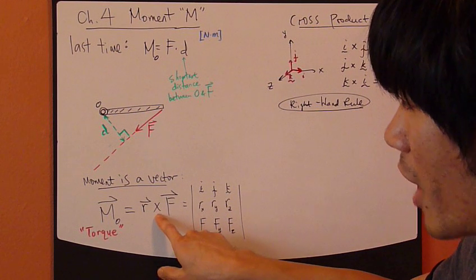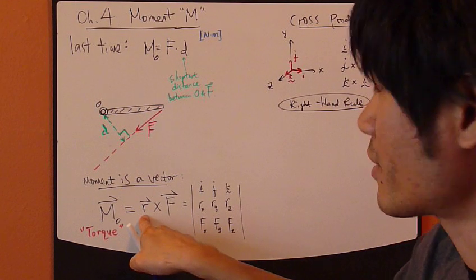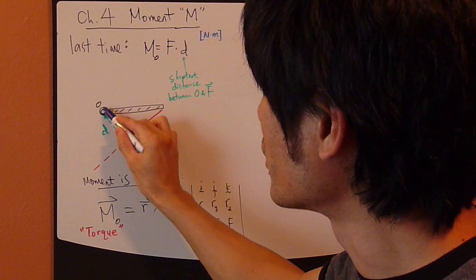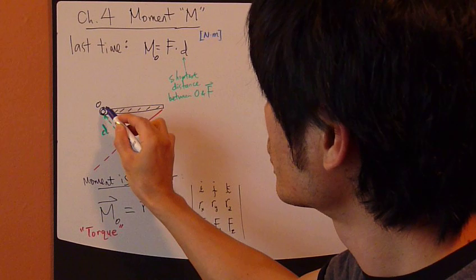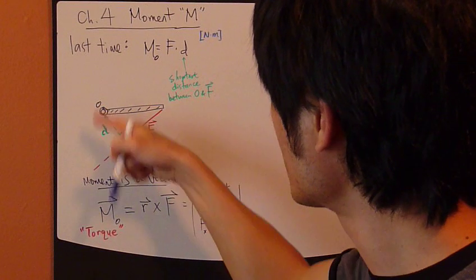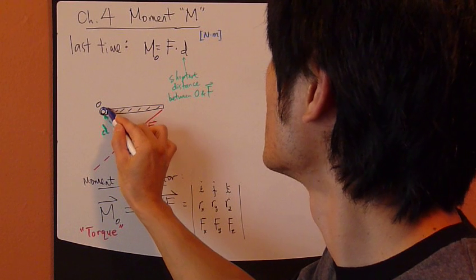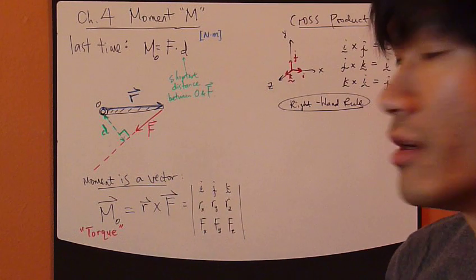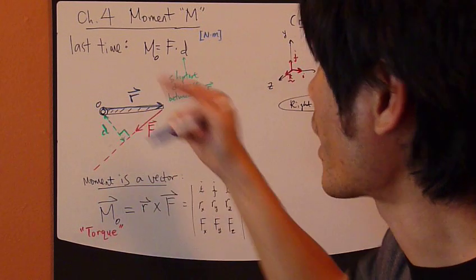Now, what's R vector? R vector is the vector going from the point where you take moment about to where the force is being applied. So in this case, R vector going from here to here. So this is my R vector.